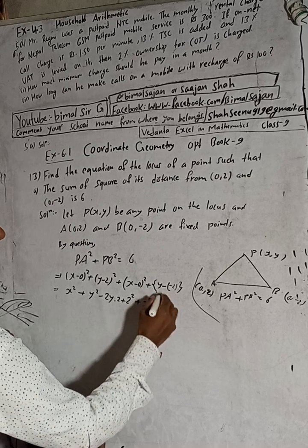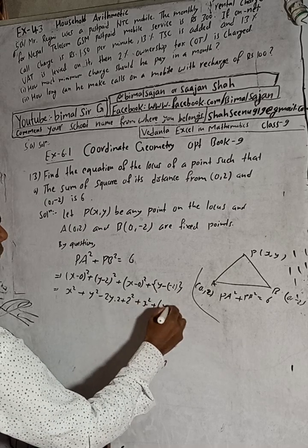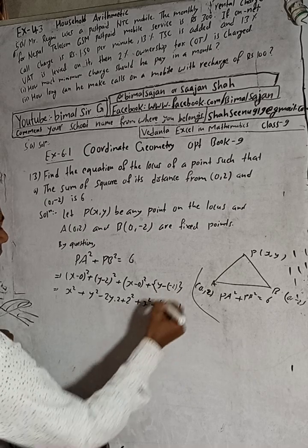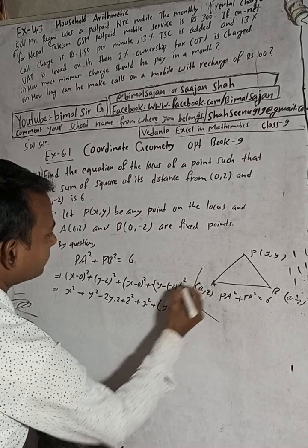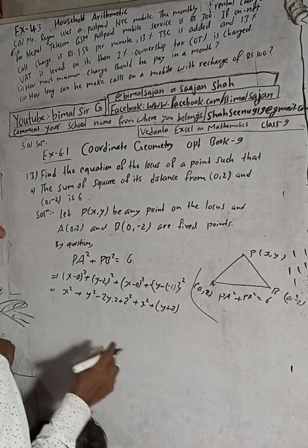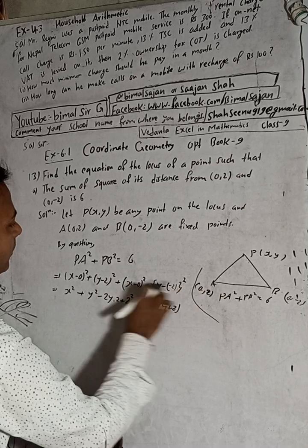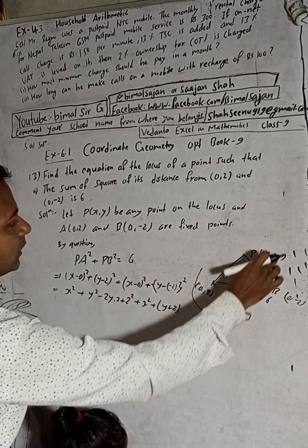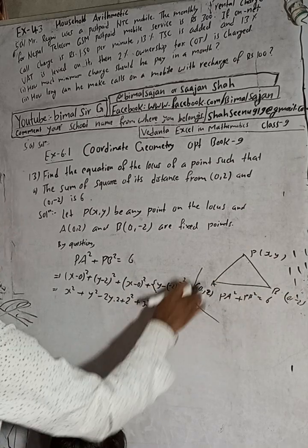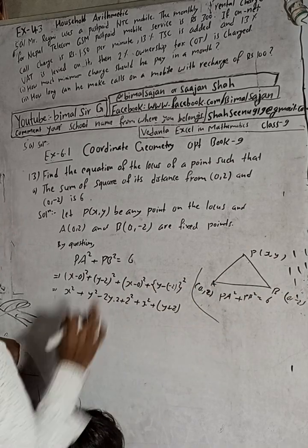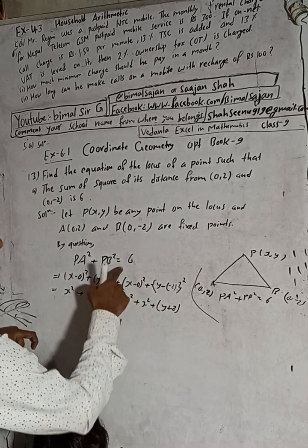For PB², we have y minus (-2), which is y plus 2, whole squared. Using the (a + b)² formula, that gives y² + 2 × y × 2 + 2², which is y² + 4y + 4. The full expression equals 6.